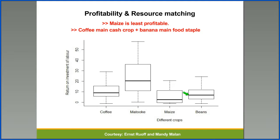Profitability and resource matching is very essential. The work we have done in Uganda shows us clearly that maize is the least profitable, and banana and coffee are quite more profitable than maize or even beans. Coffee in itself is the main cash crop, while banana is considered a major food crop.